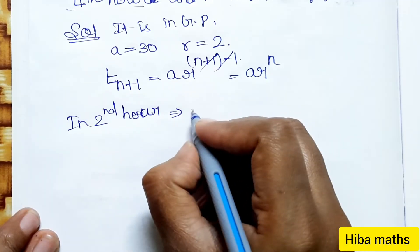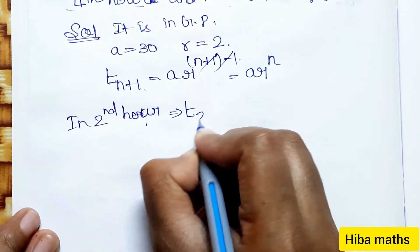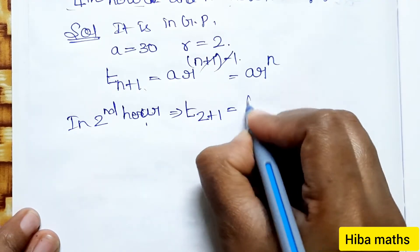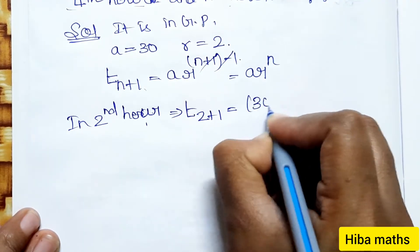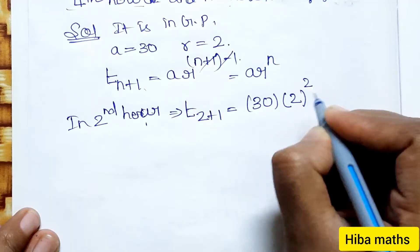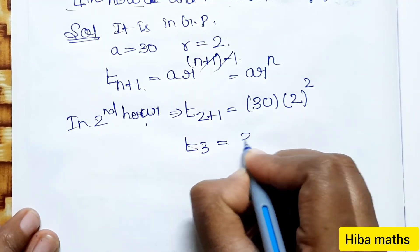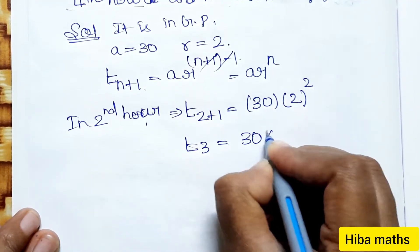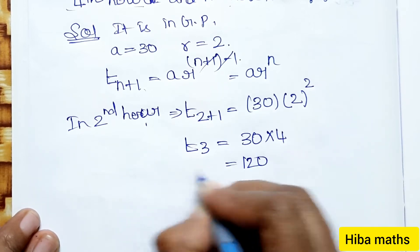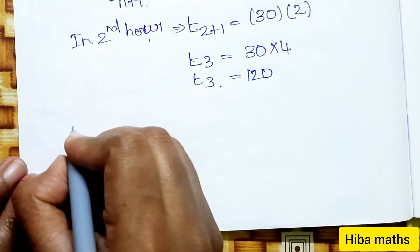At the end of the 2nd hour, we calculate T(n+1) = T(2+1) = T(3). With a = 30 and r = 2, that gives T(3) = 30 · 2² = 30 · 4 = 120. So at the end of the 2nd hour, there are 120 bacteria.